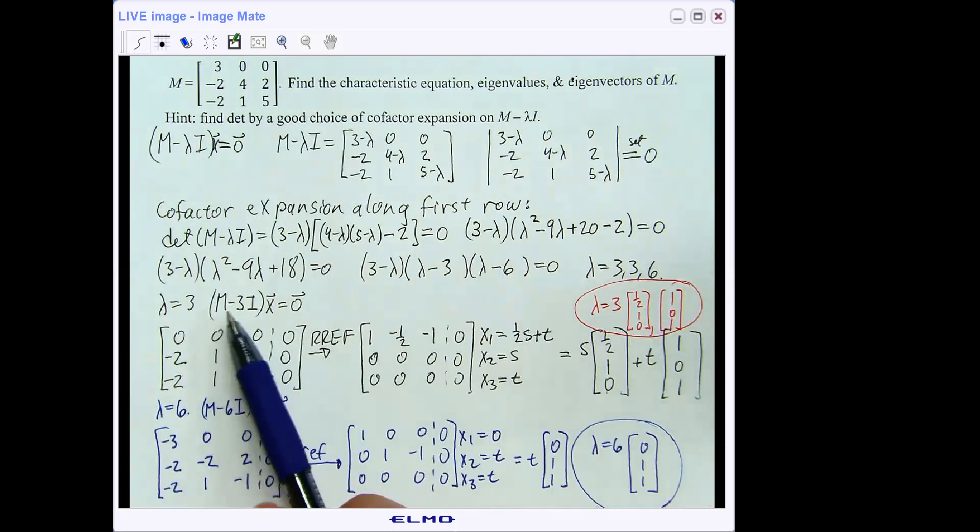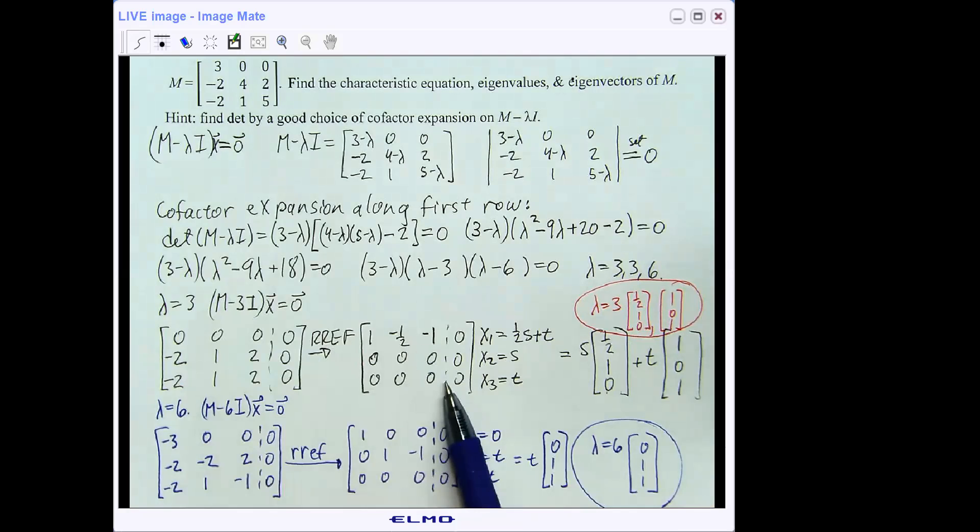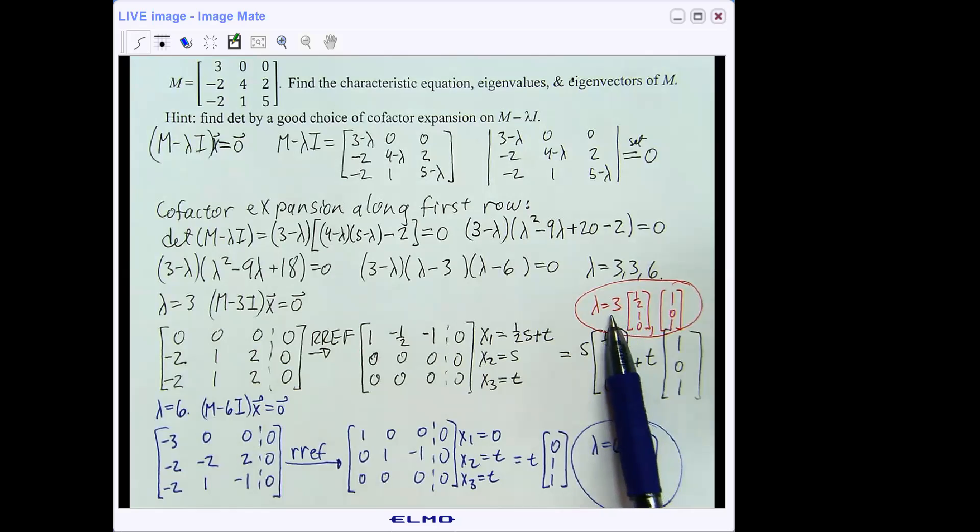Sticking that in and finding M minus 3I all times x equals 0, we find out that we get this matrix, which has not one but two parameters. And so if I pull off the S parameter and the T parameter, so this is an eigenvector as is that. So [1, 1/2, 1, 0] is an eigenvector corresponding to the eigenvalue of 3, and so is [1, 0, 1].